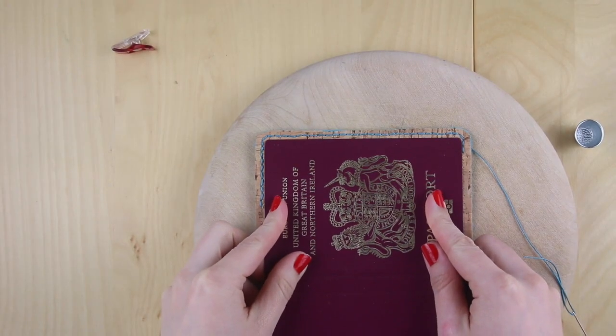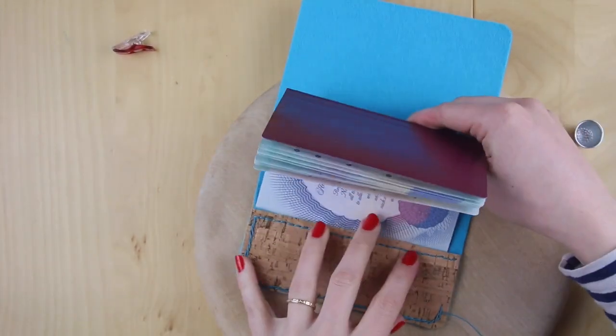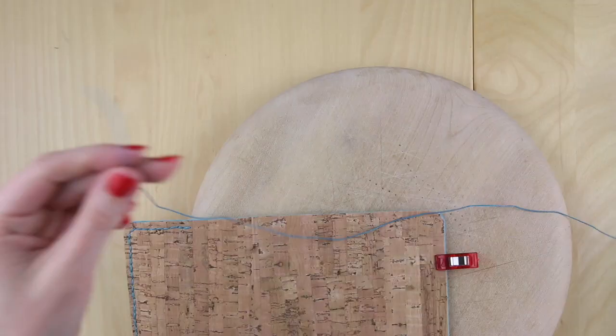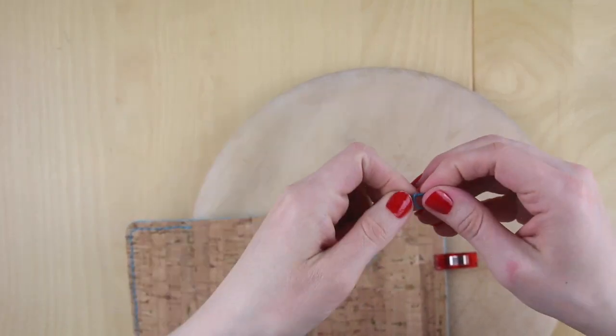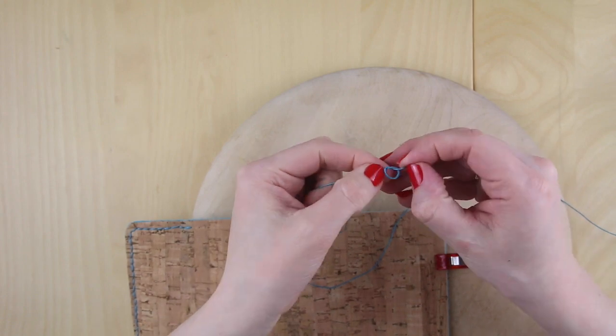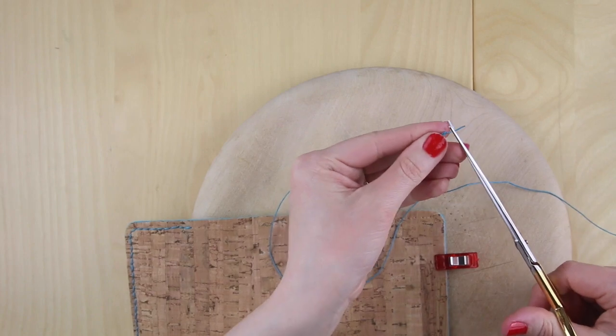Once you've stitched along that long edge just double check your passport is going to fit in and check it on the inside too. Now if you're starting another thread and don't want to tie it into the felt then just tie a knot in the thread work it down so it becomes a firm little knot and then trim the tail.